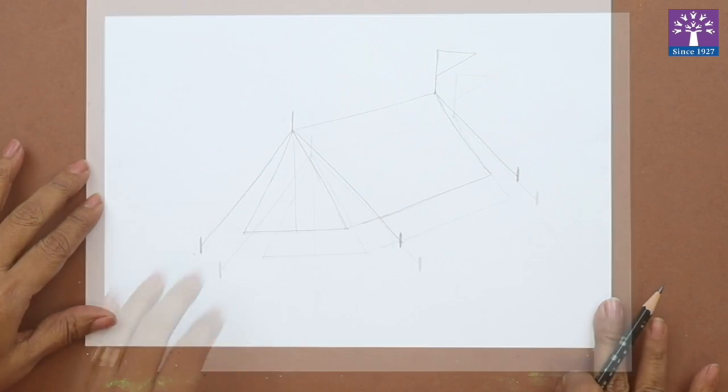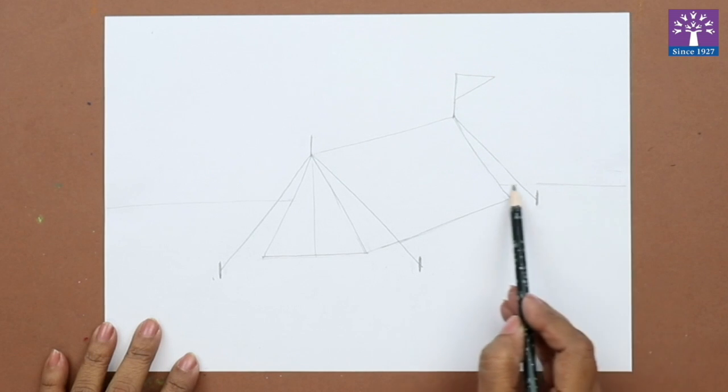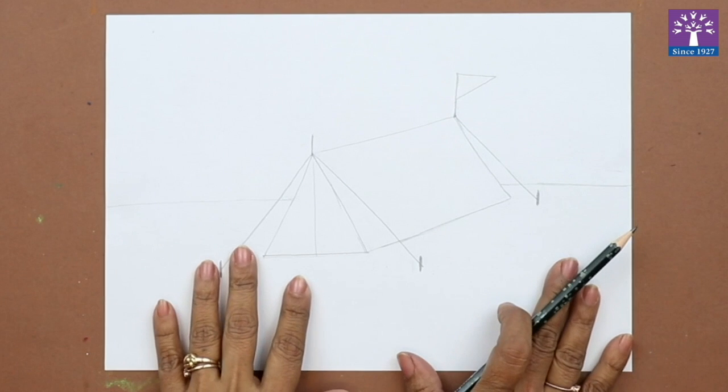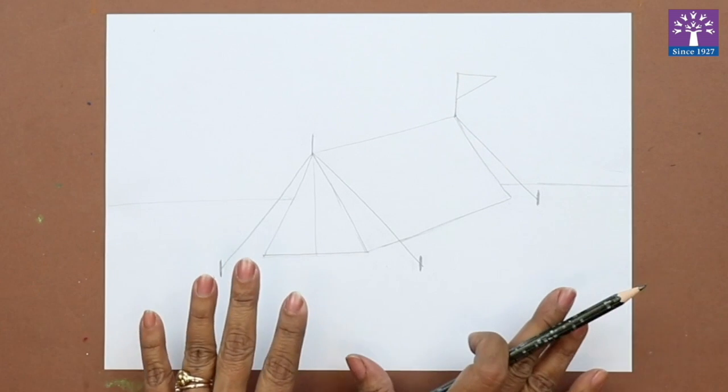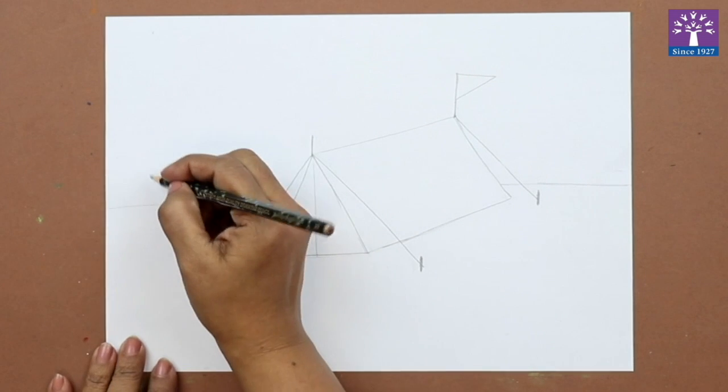We'll draw a horizontal line. Now it started to look as though your tent is on the ground, secured on the ground. Let's draw some trees.